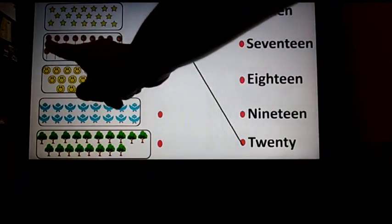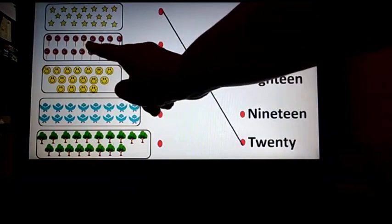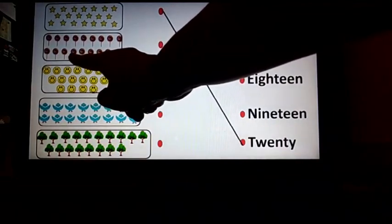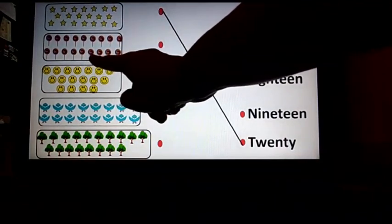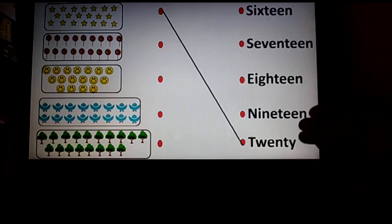Let's begin with counting the lollipops. 1, 2, 3, 4, 5, 6, 7, 8, 9, 10, 11, 12, 13, 14, 15, 16, 17, 18. What is the number name of 18? It's E-I-G-H-T-E-E-N. Where can you see this number name? You have found it here. So let's match.